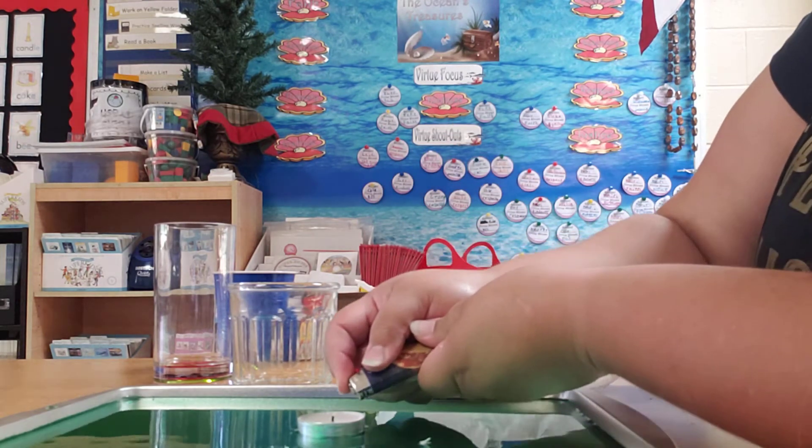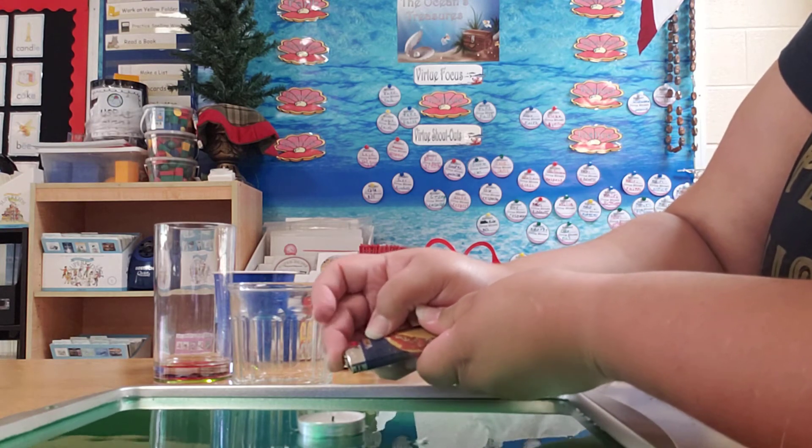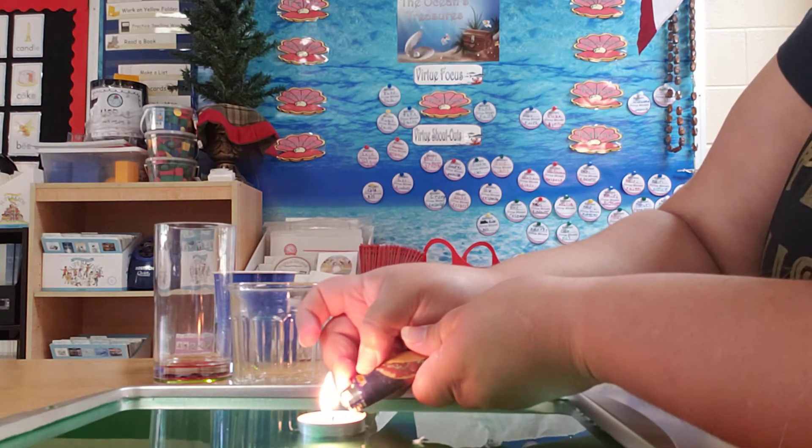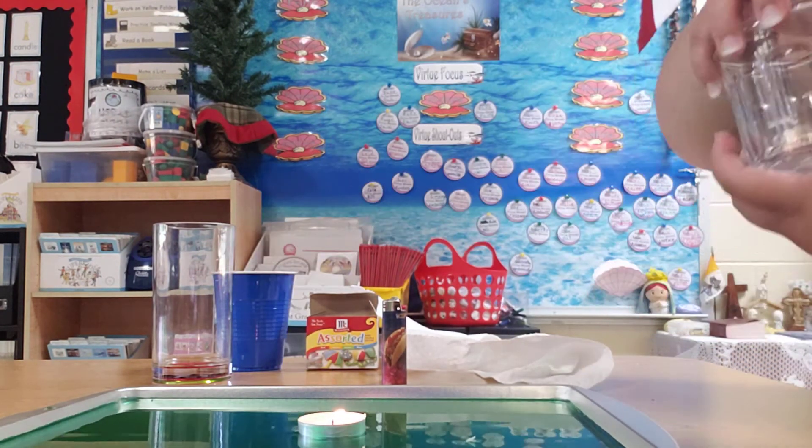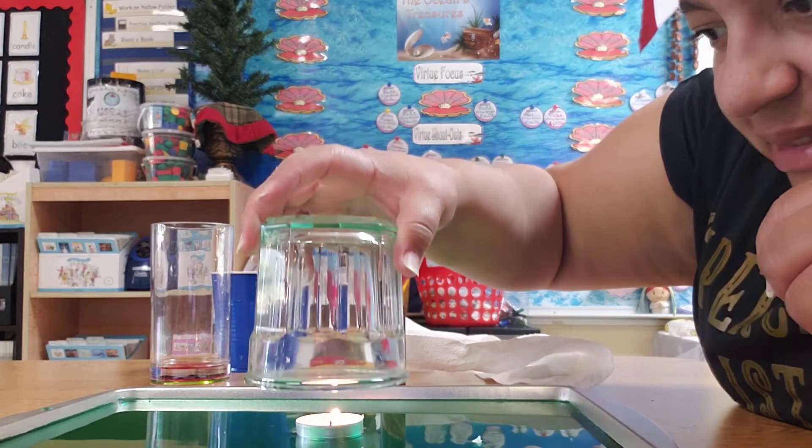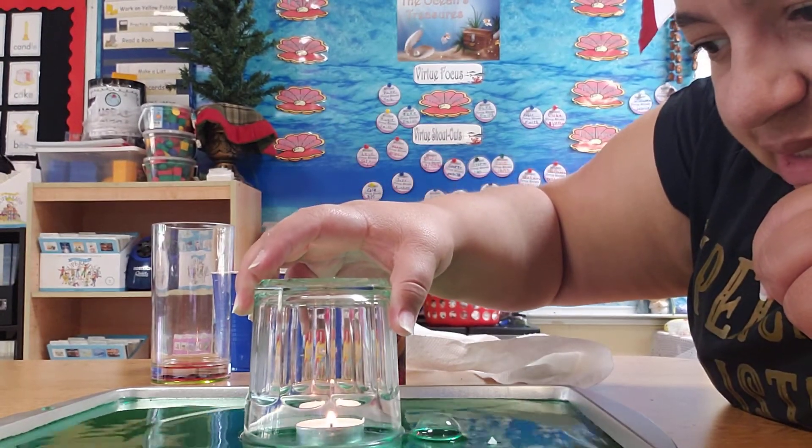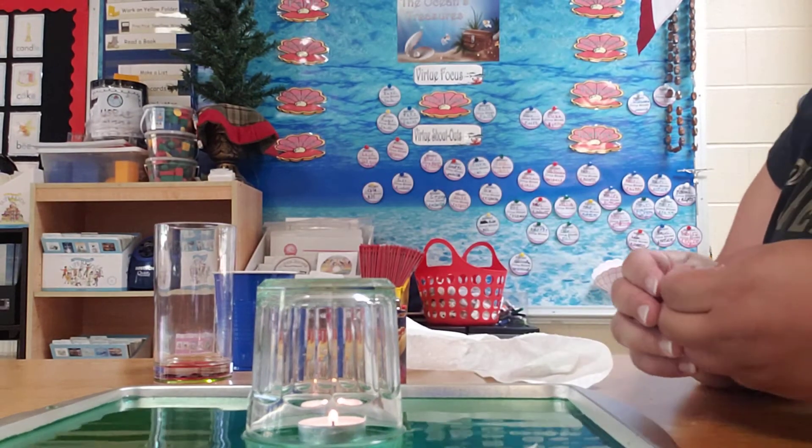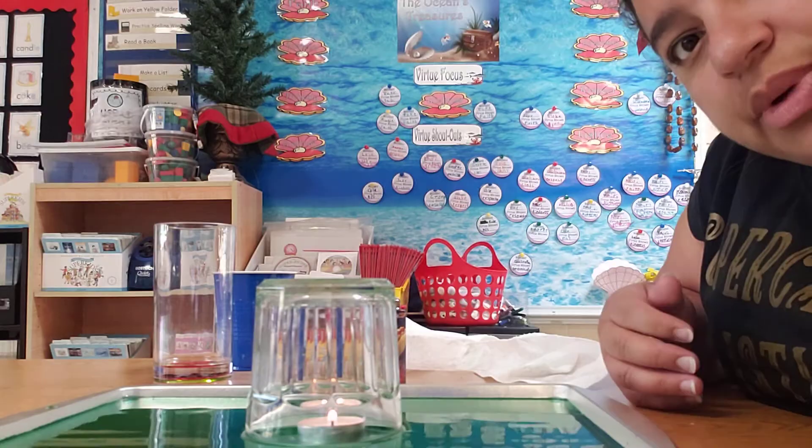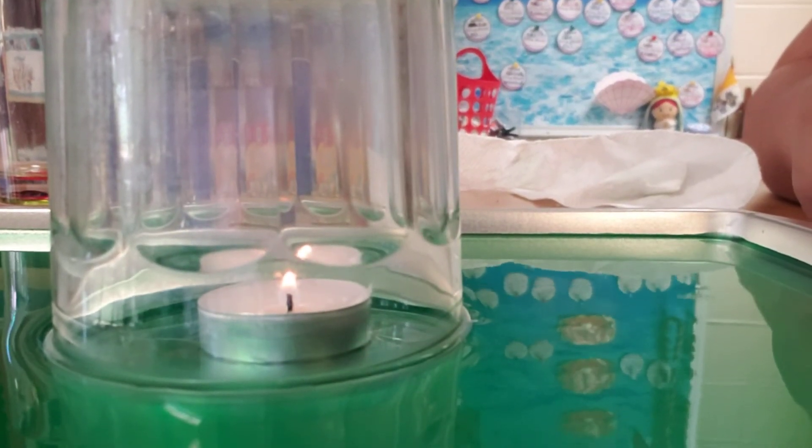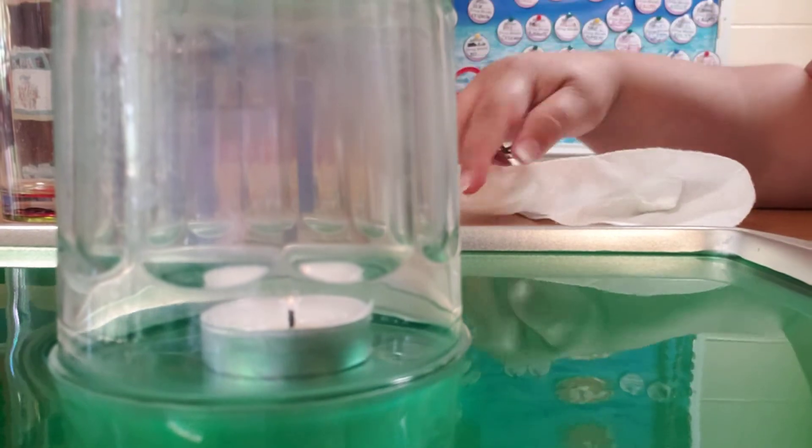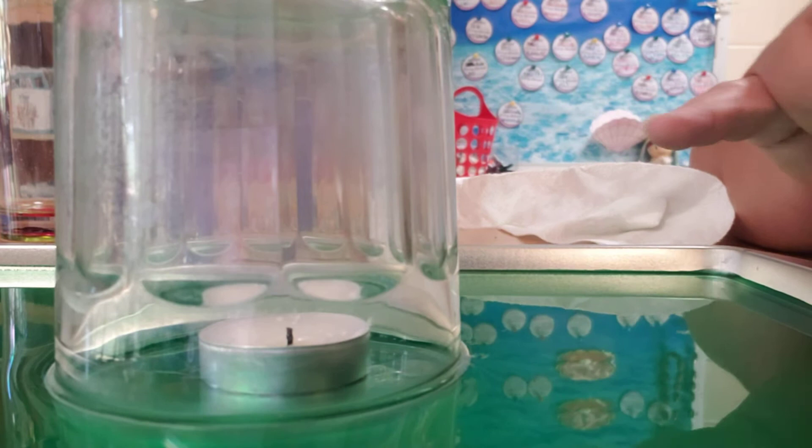All right, here we go. Flame on. All right, so here we go, we're going to use this glass. So I put it in just like I did the other one, and then we wait. So I'll bring this close. Okay, so the flame is out and so we've noticed that with the other glass the water starts to rise, right?